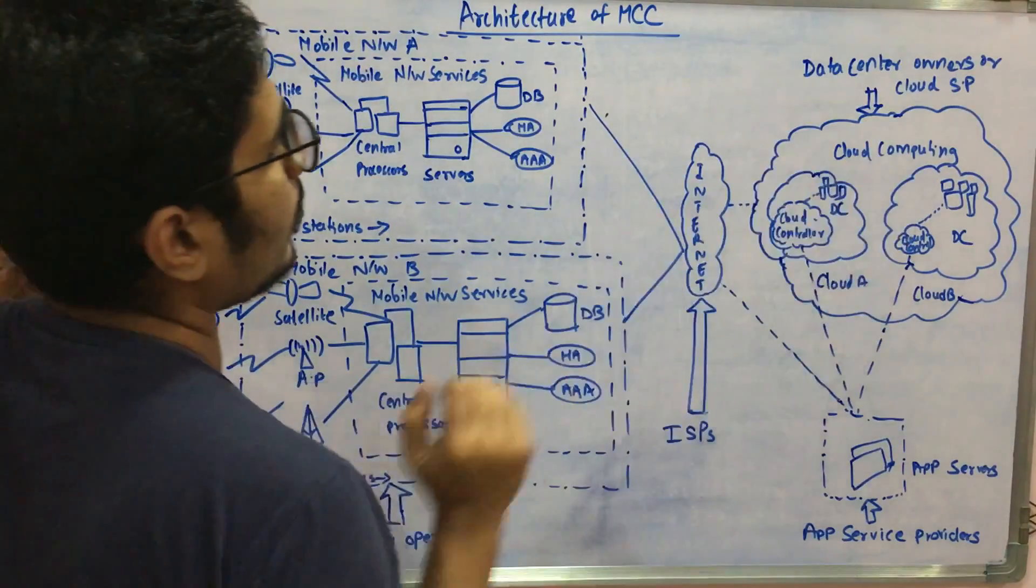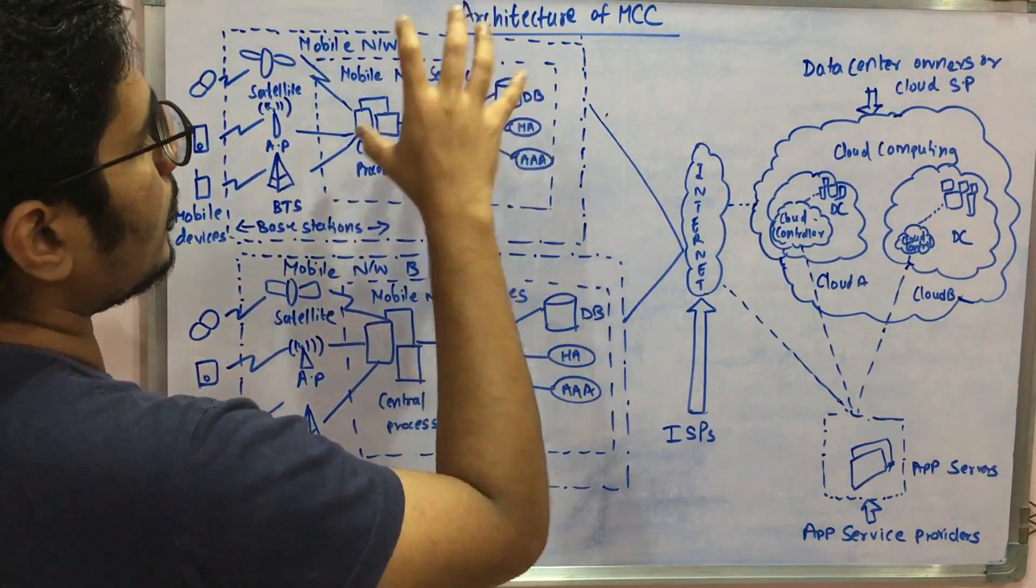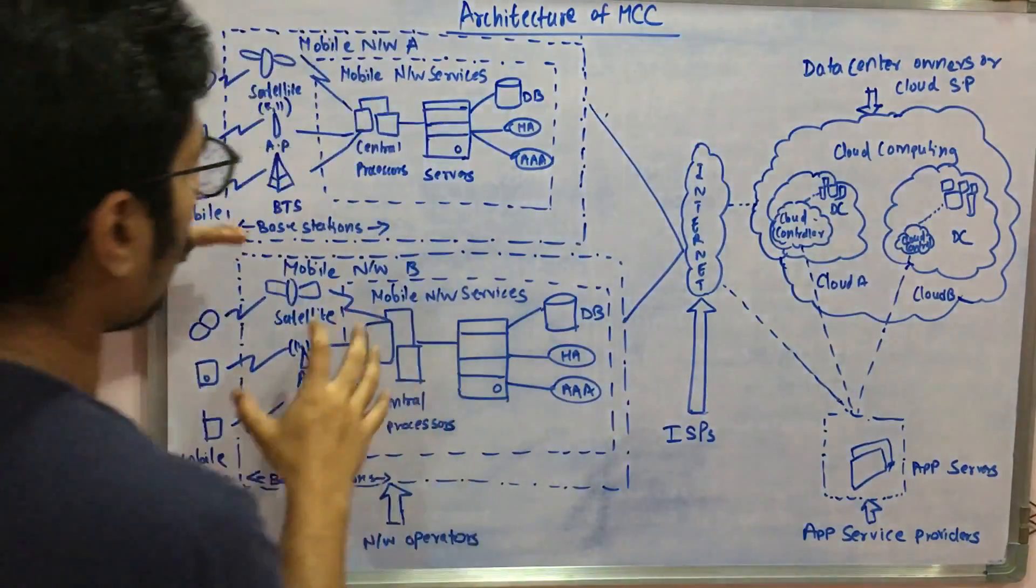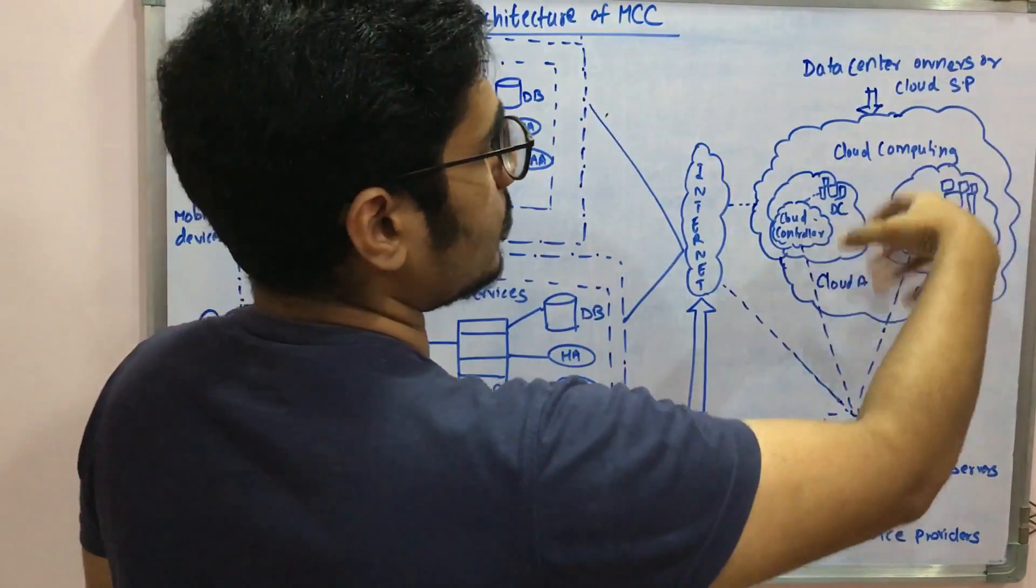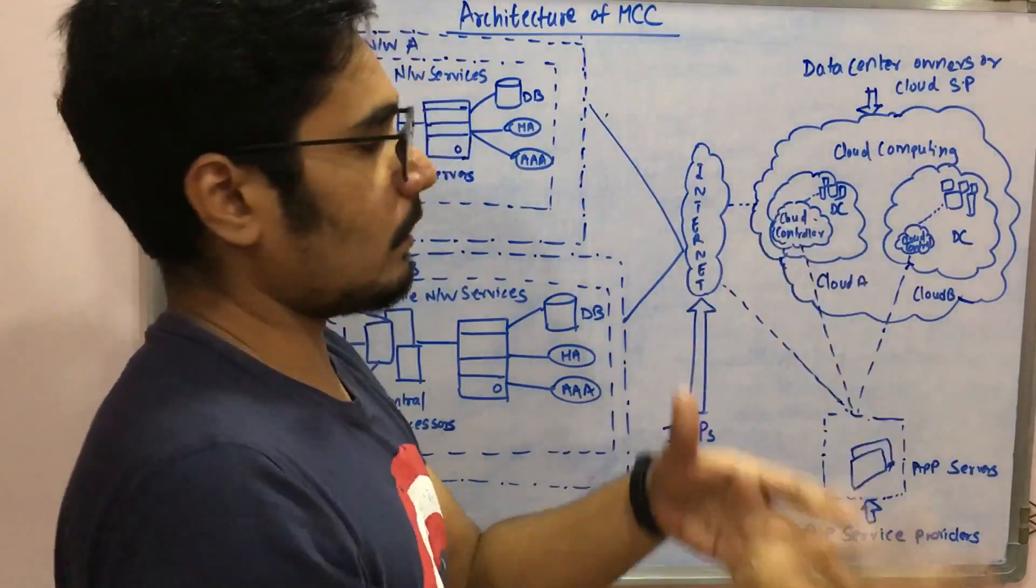For example, cloud A is assigned for mobile network A, so all the information relating to mobile network A will be managed by cloud A, and all mobile network B will be managed by cloud B. All the requests and responses will be sent by the relevant cloud A or cloud B.